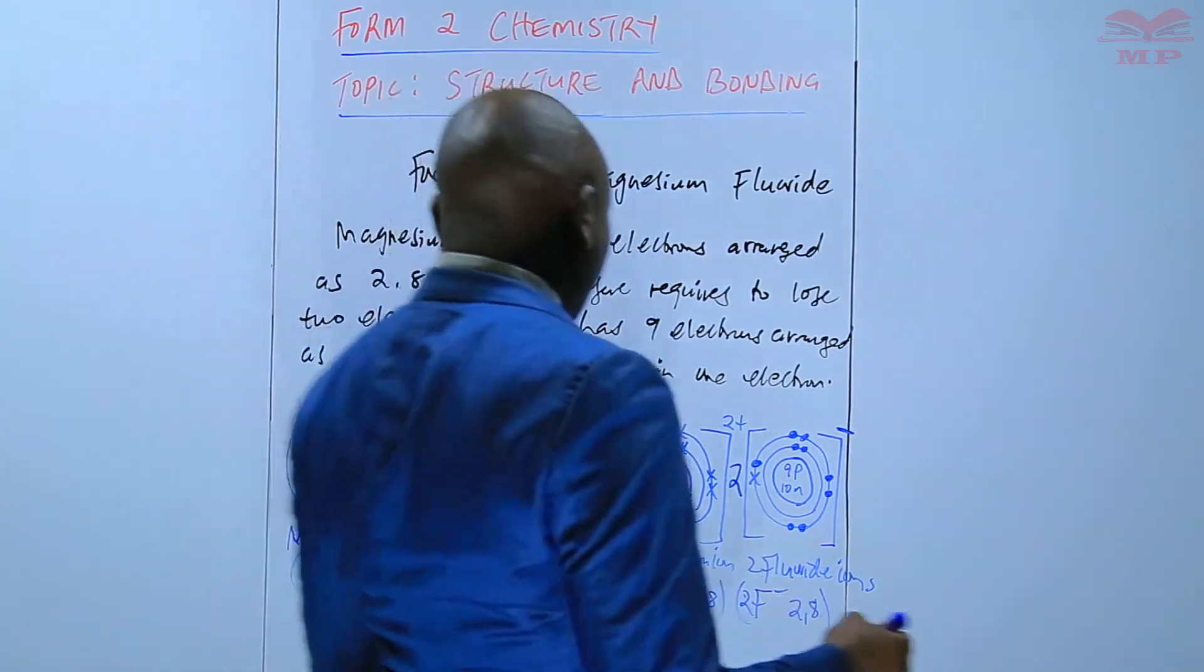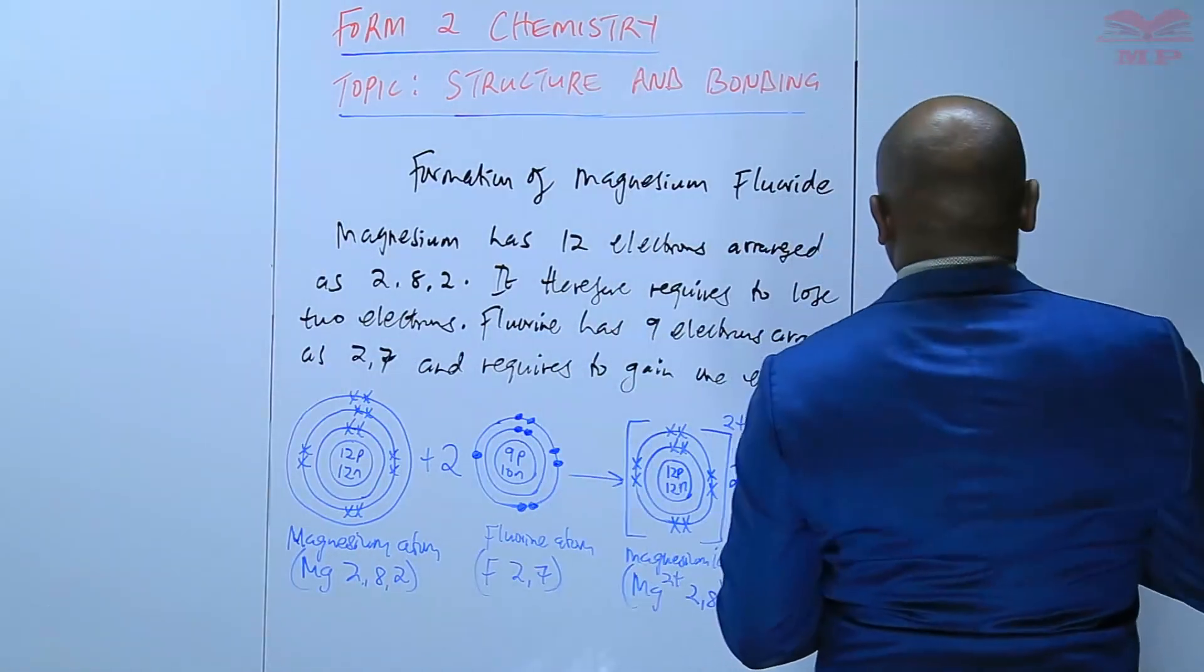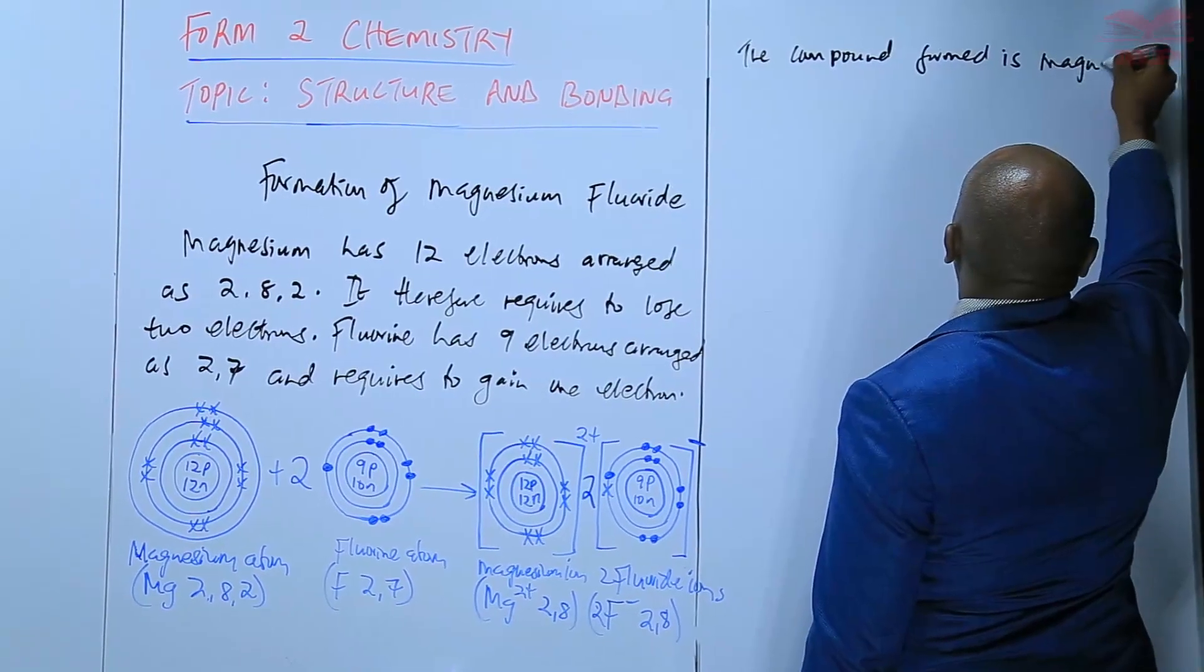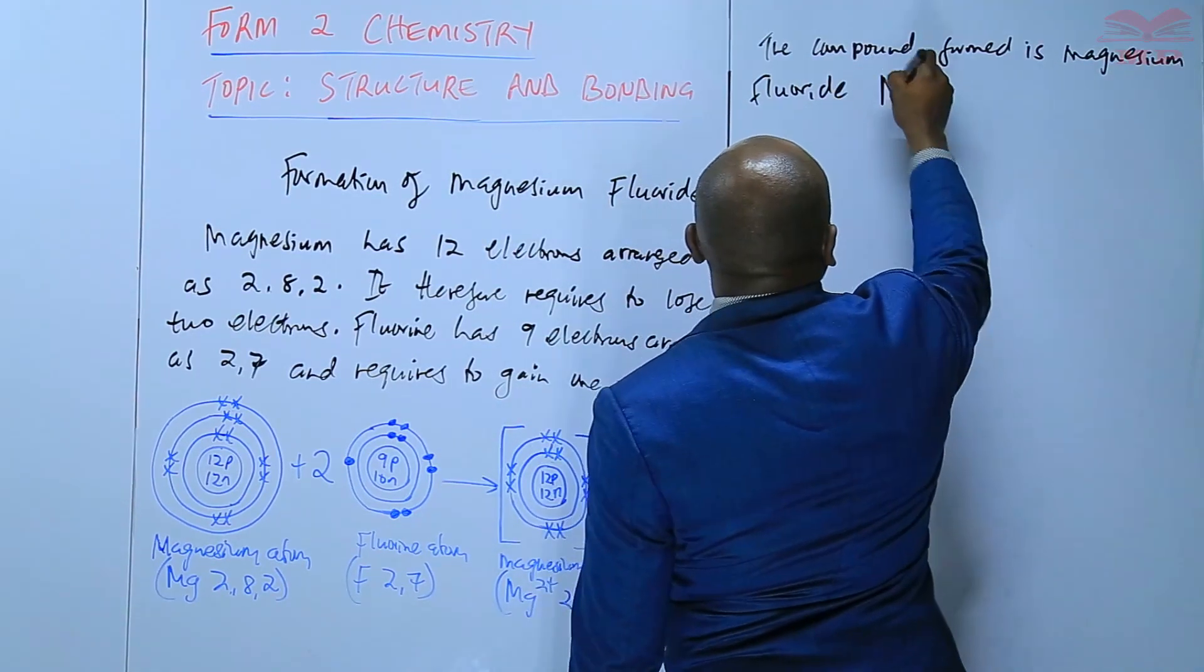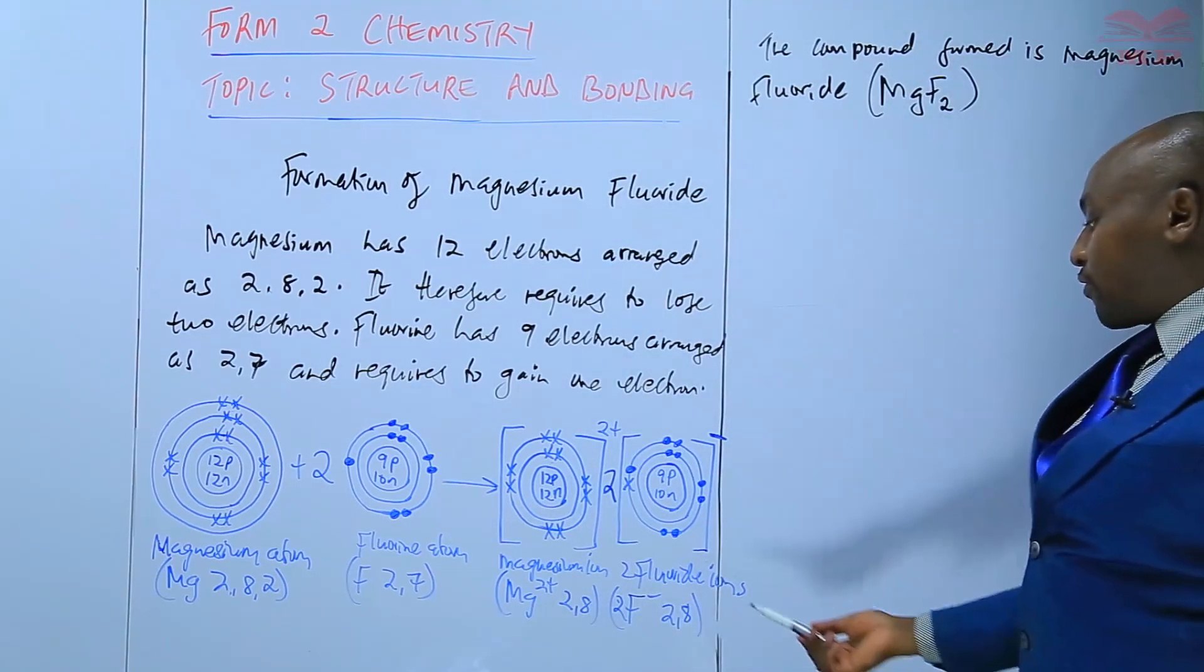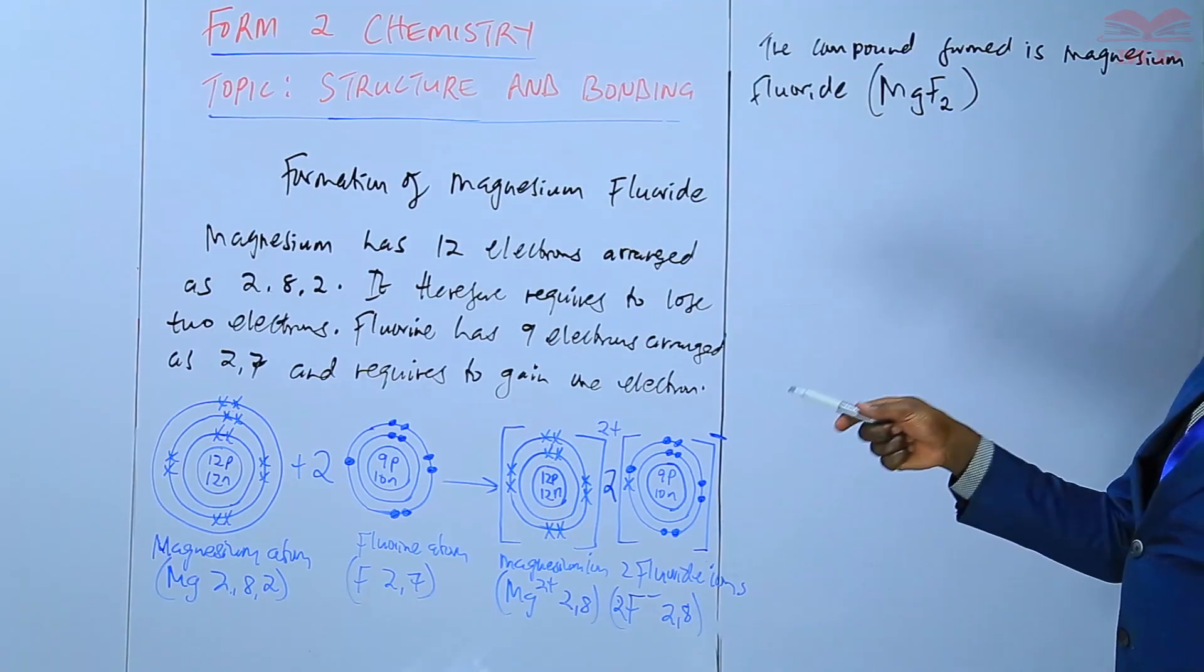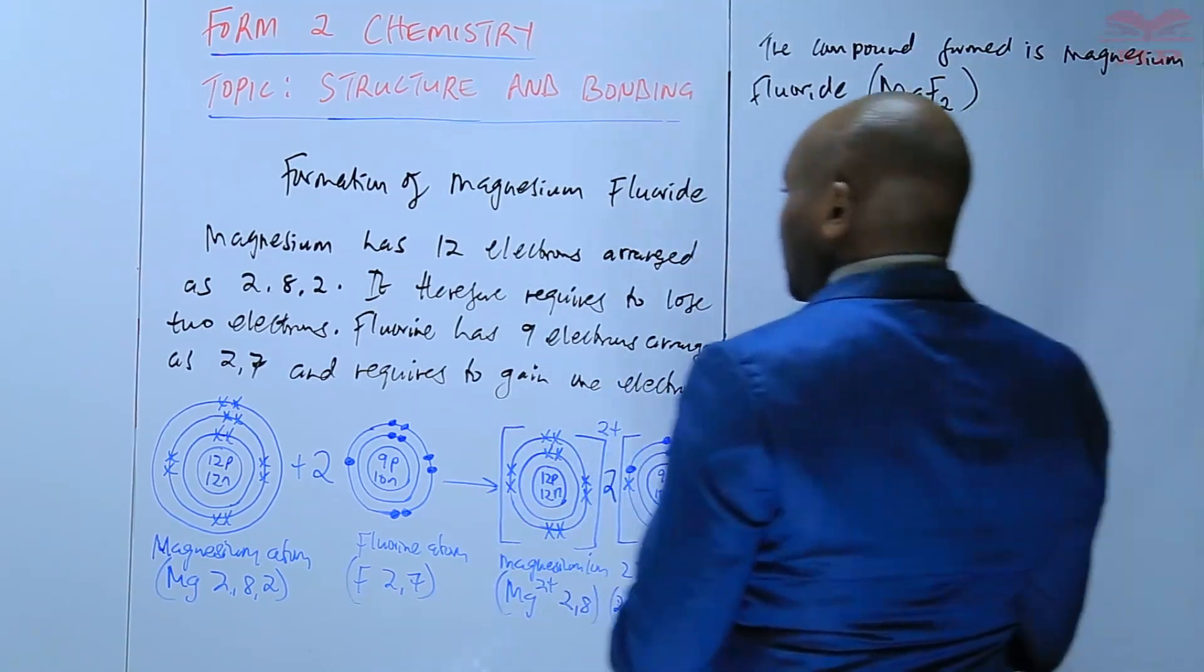The compound formed is magnesium fluoride, which is MgF2. We have two fluoride ions combining with one magnesium ion, so the formula is MgF2. We used two fluorine atoms because magnesium is losing two, but fluorine can only gain one.